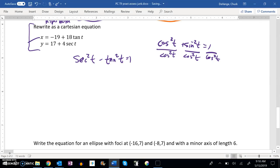So let's solve for tangent and secant. X equals negative 19 plus 18 tangent t.